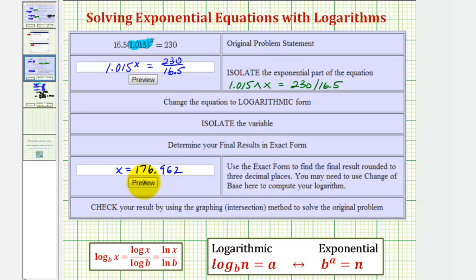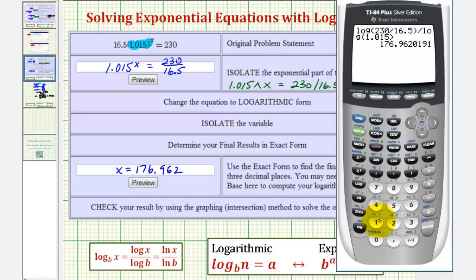Now we're going to verify this solution two ways. First we'll perform substitution back into the original equation, and then we'll also check it graphically. So we have 16.5 times 1.015 raised to the power of 176.962 should be approximately 230. And notice how it is. It's slightly less because we did round this value down.